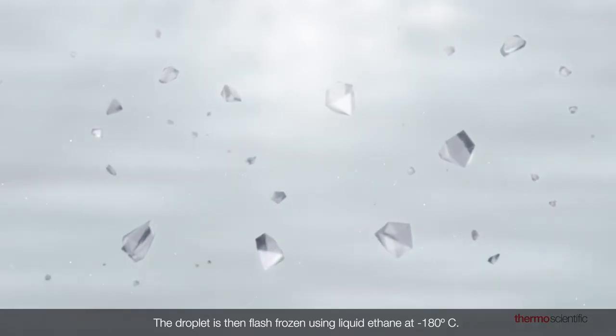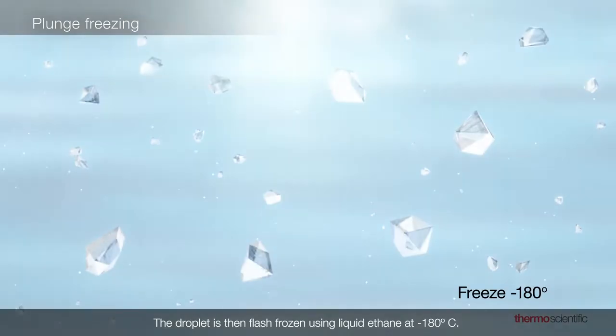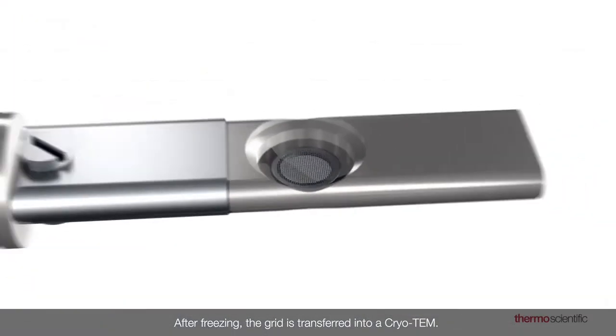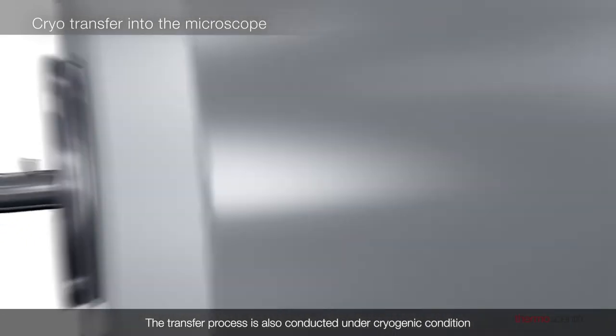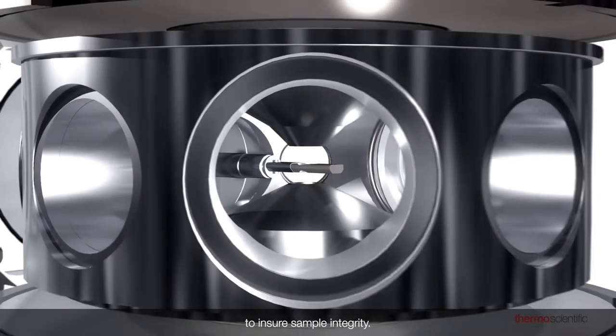The droplet is then flash frozen using liquid ethane at negative 180 degrees Celsius. After freezing, the grid is transferred into a cryotem. The transfer process is also conducted under cryogenic condition to ensure sample integrity.